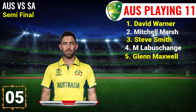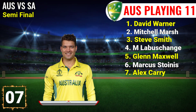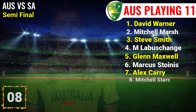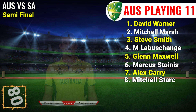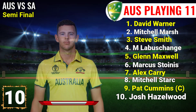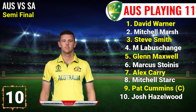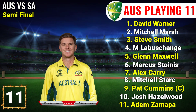Number 5: Glenn Maxwell, right-hand all-rounder. Number 6: Marcus Stoinis, right-hand all-rounder. Number 7: Alex Carey, left-hand batsman, wicketkeeper. Number 8: Mitchell Starc, left-arm fast bowler. Number 9: Pat Cummins, right-hand fast bowler. Number 10: Josh Hazlewood, right-hand fast bowler. Number 11: Adam Zampa, right-hand spinner.